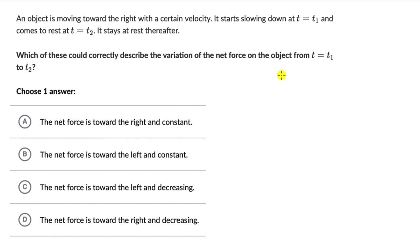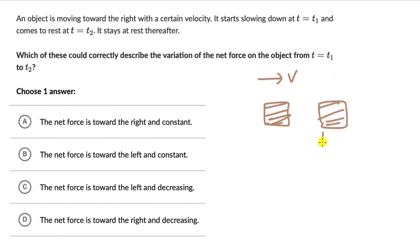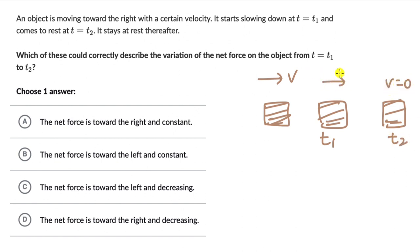Let's try to represent what's happening. We have an object moving to the right with some velocity v. At time t1, the object starts slowing down, and at time t2 the object comes to a state of rest. The velocity starts from v, slows down, slows down, and then becomes zero.